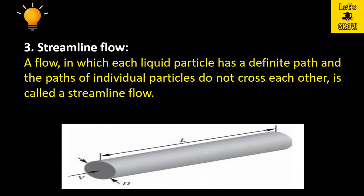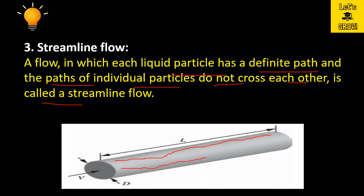A flow in which each liquid particle has a definite path and the paths of individual particles do not cross each other is called a streamline flow. A water particle flows along a definite path and does not coincide with the flow path of other particles. Here, three water molecules are shown with definite paths that do not cross each other — this is streamline flow, where the flow path is definite and does not coincide with other molecules' paths.